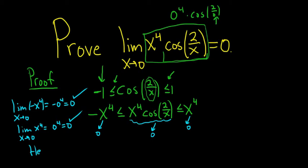So hence, the limit as x approaches 0 of x to the 4th times the cosine of 2 over x is equal to 0 by the squeeze theorem.